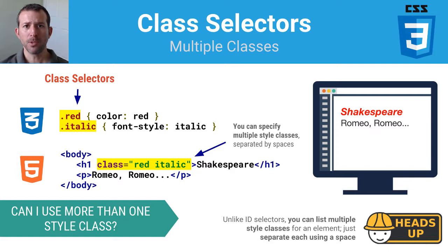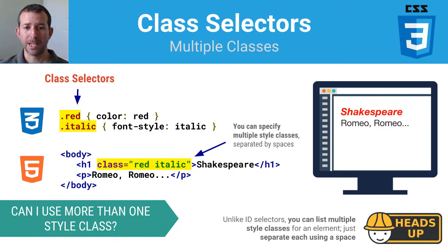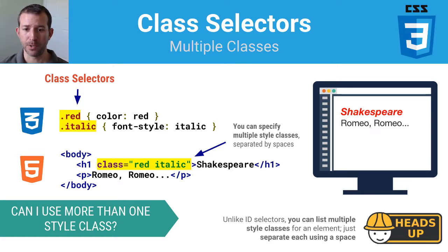If you want to use multiple class selectors — say a class named "red" and one named "italic" — and you want to be able to apply these classes to different elements however you choose, by separating them with a space you will be able to apply more than one class to an individual element.